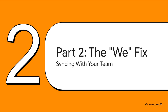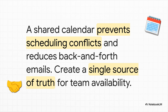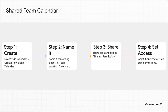The WE fix is all about taking that personal organization and scaling it up to the whole team. This gets rid of those endless email chains just trying to figure out who's in the office next Tuesday. The goal is to create one single source of truth. You need to plan a big project launch — with one click, you can see everyone's planned time off in a single view. No more guesswork, no more awkward 'oh shoot, I had no idea you were on vacation' moments. Just clarity. You just create a new calendar, give it a super obvious name like Team Vacation Calendar, and share it. But pay close attention to the permissions — you want everyone to see it, but probably only a manager or admin should be able to edit it. That prevents any accidental deletions or changes.